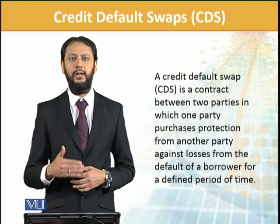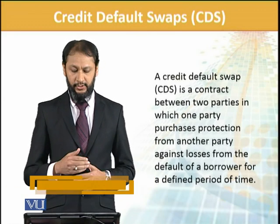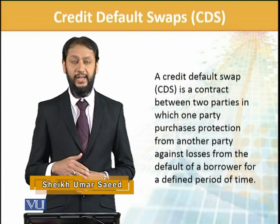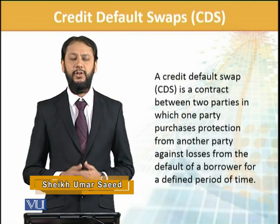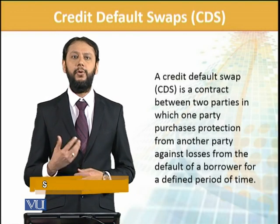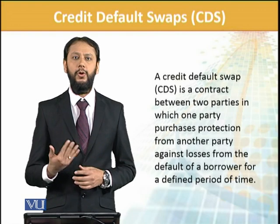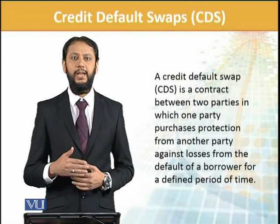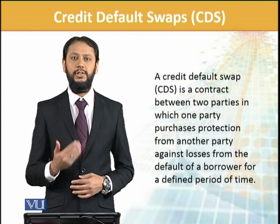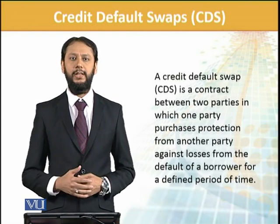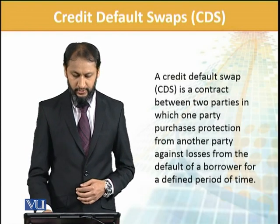CDS is also a kind of insurance — we purchase protection from another party for loss against default of a borrower for a defined period. The structure is: if we have bought someone's bond, the risk for the bond holder is that the party which issued the bond can default. To capture that risk, the instrument that comes in is the Credit Default Swap.